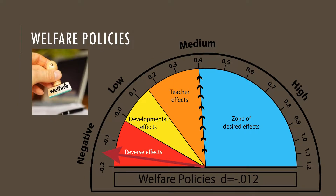Regarding welfare policy, this is about supporting the whole family to receive welfare from the government. Students may not get a good education because of the socio-economic situation of the family, which reflects learning ability and achievement. It's not the welfare policy itself that's the issue, but the socio-economic status of the family that has the effect on the student's learning ability.